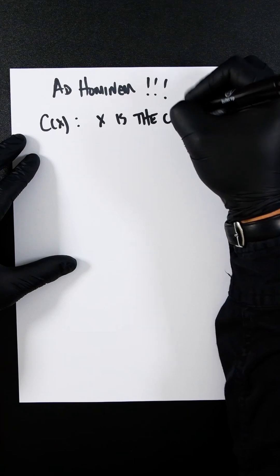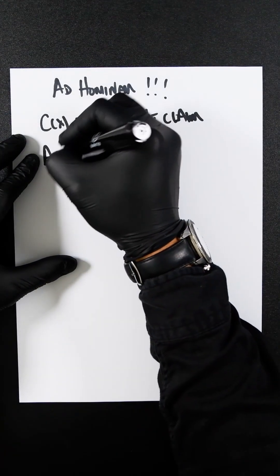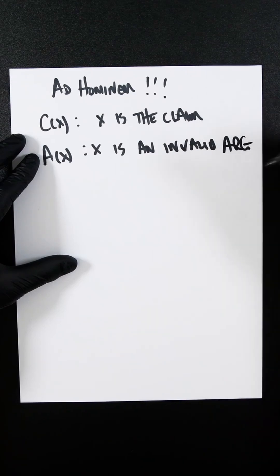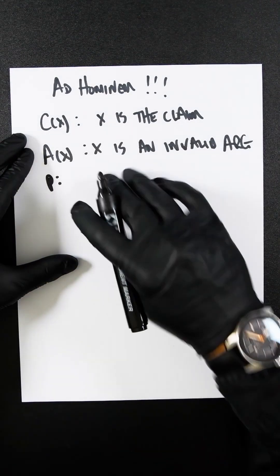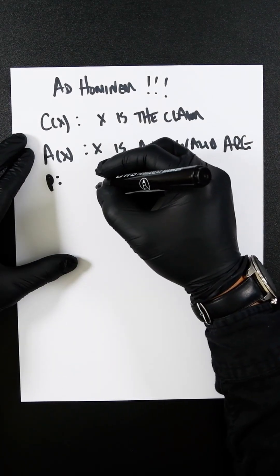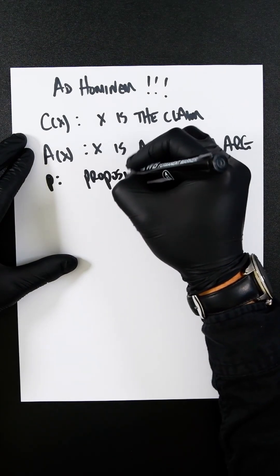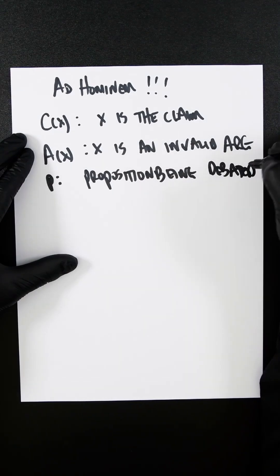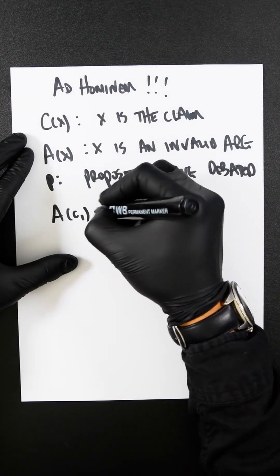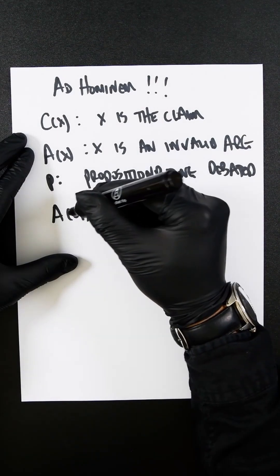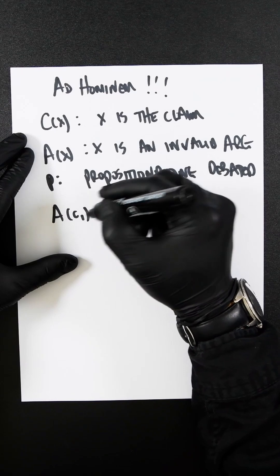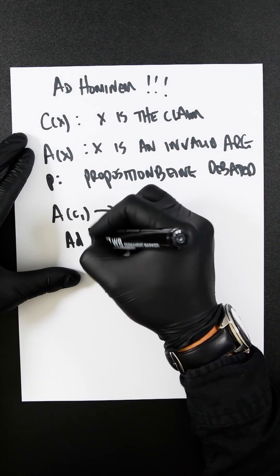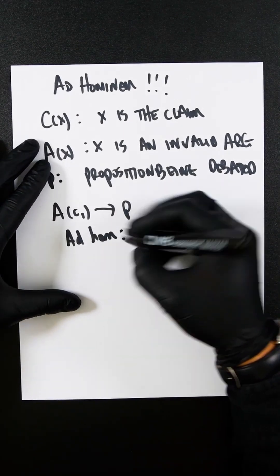Where x is the claim, and we have A(x) where x is an invalid argument, and P is the proposition being debated. Let's say A(c1) gives us P — so if x is a valid argument, and x is a valid argument, then we can conclude P.